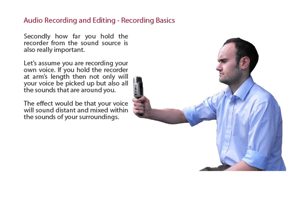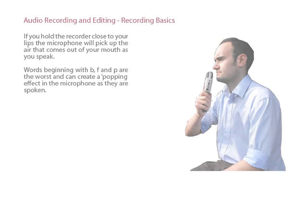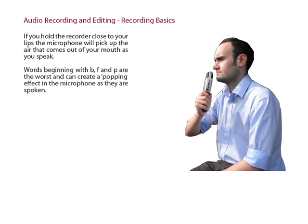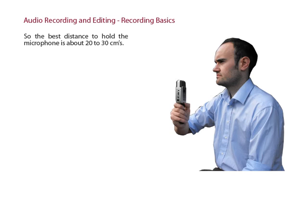Secondly, how far you hold the recorder from the sound source is also really important. Let's assume you are recording your own voice. If you hold the recorder at arm's length, then not only will your voice be picked up, but also all the sounds that are around you — the effect would be that your voice will sound distant and mixed with the sounds of your surroundings. If you hold the recorder close to your lips, the microphone will pick up the air that comes out of your mouth as you speak. Words beginning with B, F, and P are the worst and can create a popping effect in the microphone. So the best distance to hold the microphone is about 20 to 30 centimetres from your mouth.